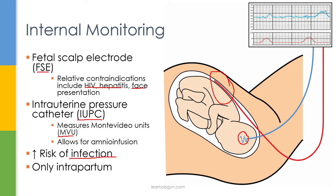You can mix and match internal and external monitors — for example, an FSE with an external tachometer, or an IUPC with an external transducer. Only use internal monitors when their benefit is needed. If you can get the fetal heart rate with just the external monitor, you don't need an FSE. A general principle of labor management is to reduce unnecessary vaginal exams or internal monitoring, since each additional exam increases infection risk.